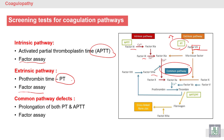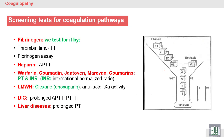For the common pathway, the tests used are both PT and PTT. The next step will be a factor assay — here we assess the intrinsic and extrinsic factors, as well as factor 10, and fibrinogen.